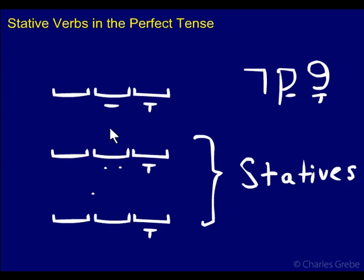Perfects that have a PATACH are generally dynamic. And this set — the dynamic set — is by far the larger set; there are fewer statives, even though there are two types. Let's look at some examples of both dynamic and stative verbs, just to make this clear.